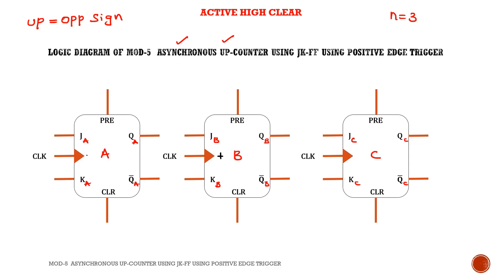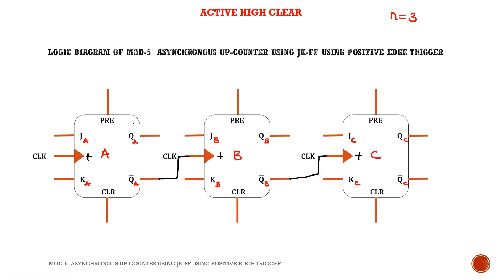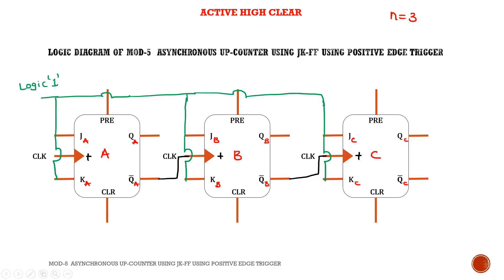The clock is positive edge trigger. For an up counter, the opposite (negative) sign must be connected. Since QA is always positive, QA-bar is always negative — so the clock input to flip-flop B is connected to QA-bar. Similarly, QB-bar is connected as the clock to flip-flop C. Additionally, J and K inputs of all flip-flops are connected to logic 1.